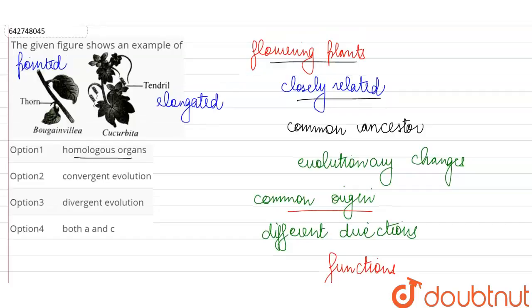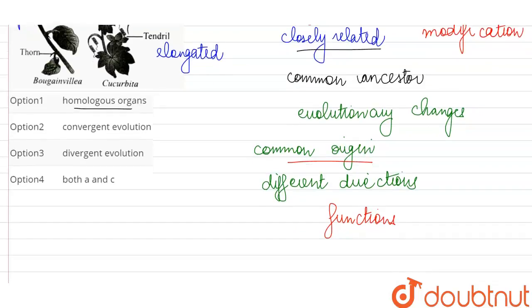The thorn of bougainvillea and the tendril of cucurbita, both of these structures are formed by the modification of stem. So their origin is the same, morphologically it is the same structure of the plant body, but they have evolved along different directions.